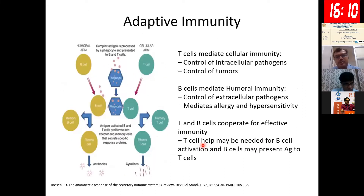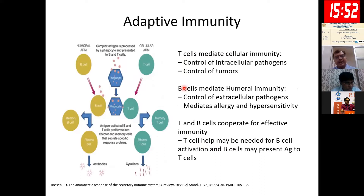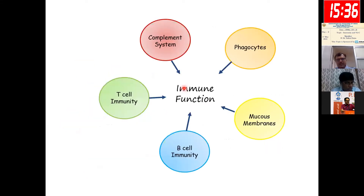The adaptive immune system is comparatively a newer immune process. T cells and B cells are the most important components, but they don't function on their own — their response always involves interactions with the innate immune system. Together, the adaptive and innate immune systems function to maintain the intact immune status of the body. Any defects in any of these components will cause dysfunction of the immune system.